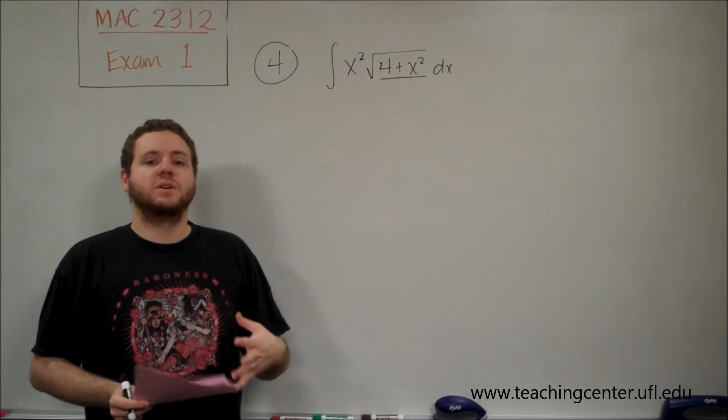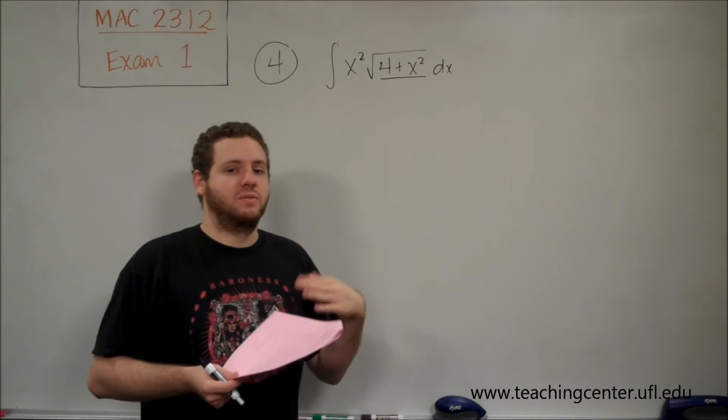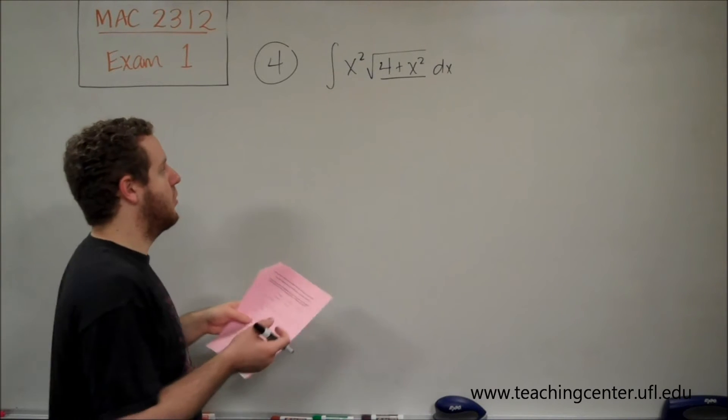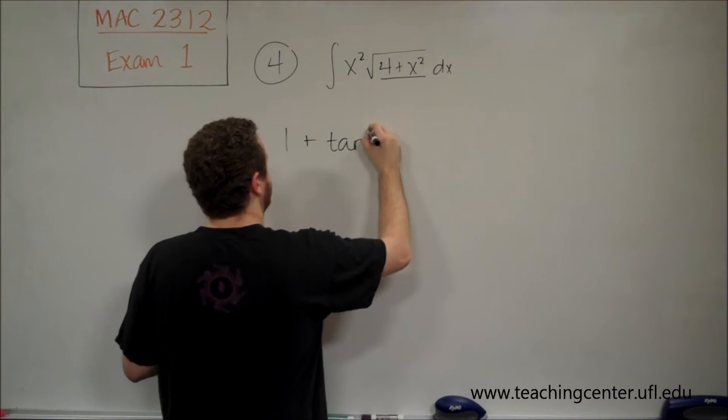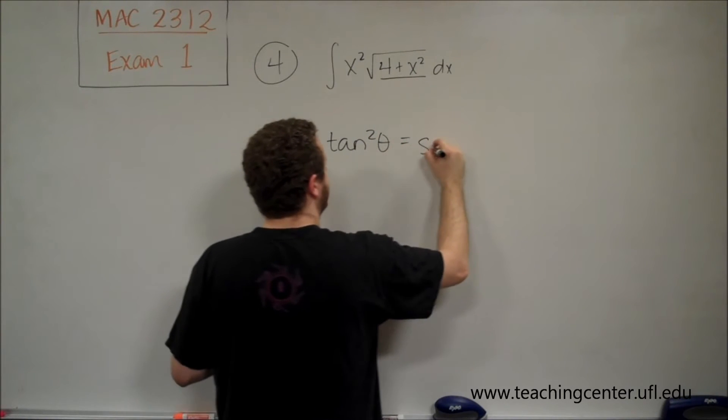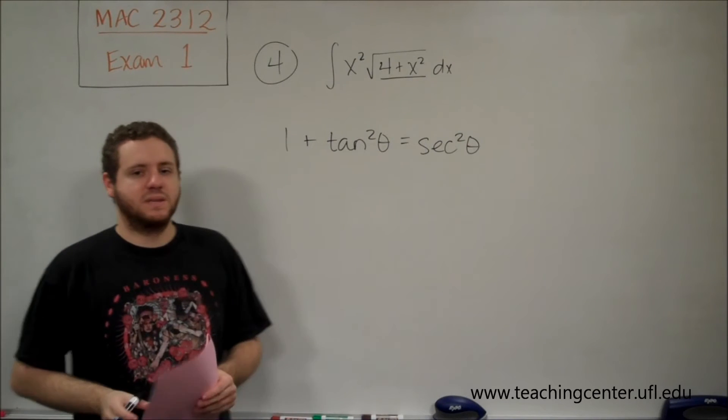So we need to think about which trig function is most appropriate in substituting for that. And if you're not just going by memorizing all the forms, we know that we have a trig identity: 1 plus tangent squared theta equals secant squared theta.